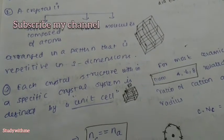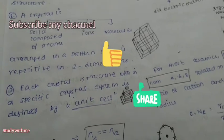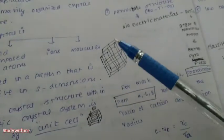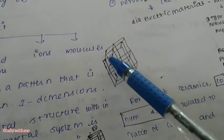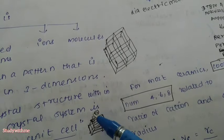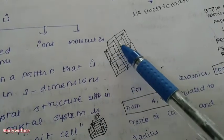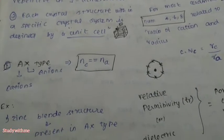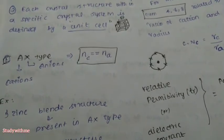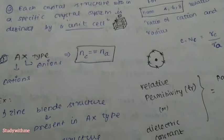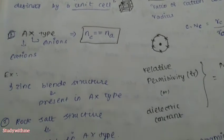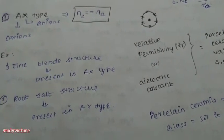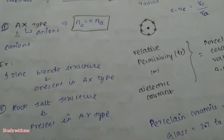Each crystal structure is defined by a specific unit cell. Let's study the unit cell. The first type involves the number of cations and number of anions — this is studied as the AX type.